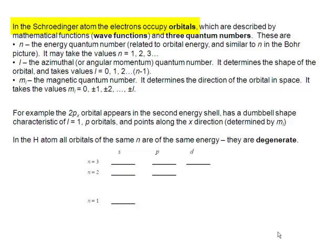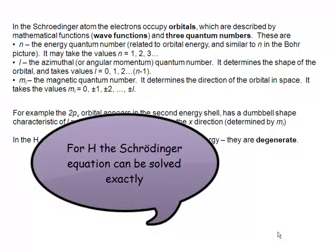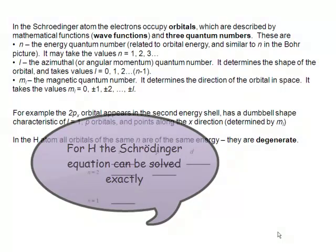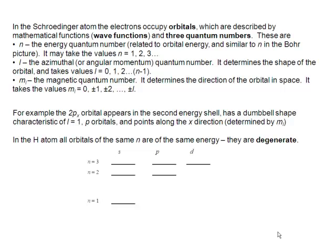In the Schrödinger atom, the electrons occupy orbitals, which are described by a particular kind of mathematical equation, the wave equation. It turns out for the hydrogen atom, Schrödinger could solve the Schrödinger equation exactly. And to solve the Schrödinger equation exactly, he ends up with these things called the wave functions, and they're described by three quantum numbers.